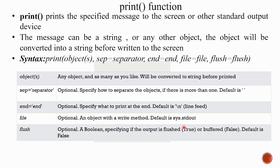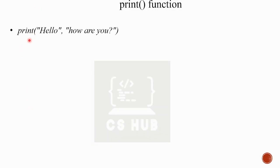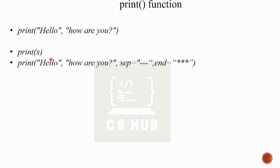The flush parameter allows you to flush the output. Now an example: print('hello how are you') will print a string. We can also print variables — for example, print(x). We can print two strings together: print('hello', 'how are you'). We can also add the sep parameter — for example, sep='*' — which will separate the output with a star.